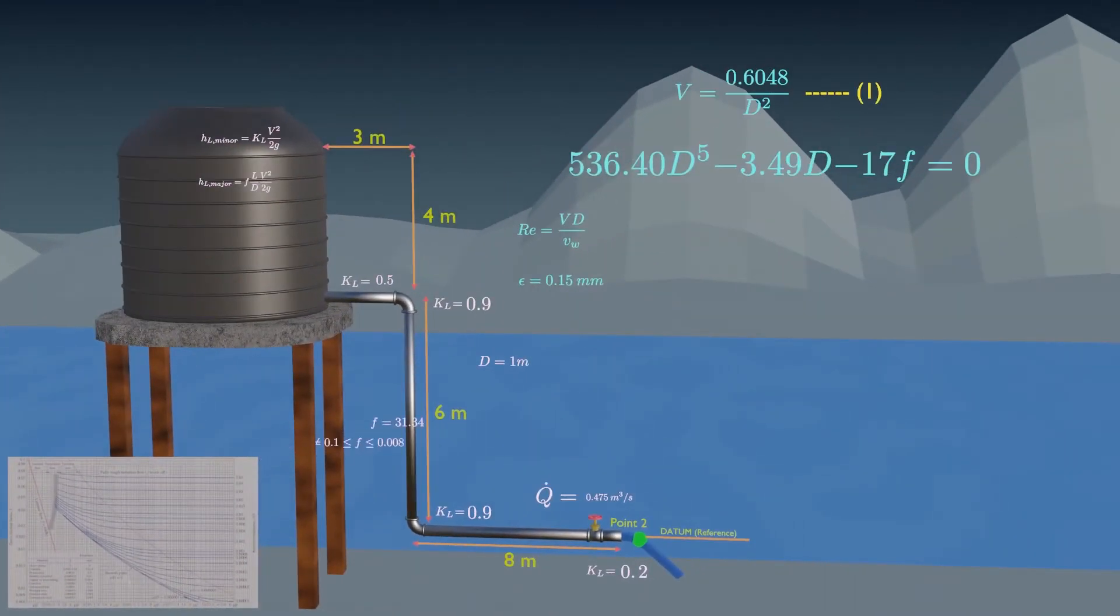The same goes for d equals 0.4 meter, so we need even less diameter. If we assume d equals 0.35 meter, then we get f in the range.